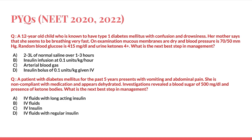The options are 2–3 liters of normal saline over 1–3 hours, insulin infusion at 0.1 unit/kg/hour, arterial blood gas, or insulin bolus of 0.1 unit/kg IV. All are steps of management, but when the patient first comes to the emergency, the next best step is to obtain an ABG — a baseline pH and electrolyte levels — so management can be decided accordingly. The answer is arterial blood gas.